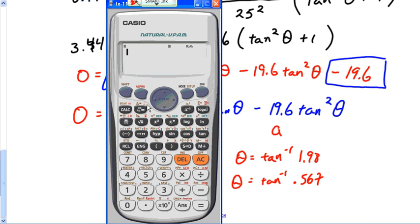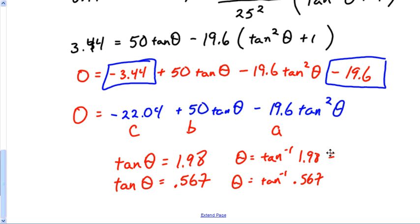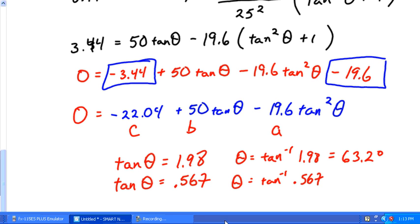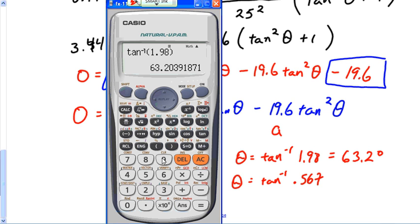How can I determine theta out of this? Well easy, all I got to do to find theta is take an arc tangent 1.98 and take the arc tangent 0.567. Looks like I've got 63.2 degrees and the other angle is 29.6 degrees.